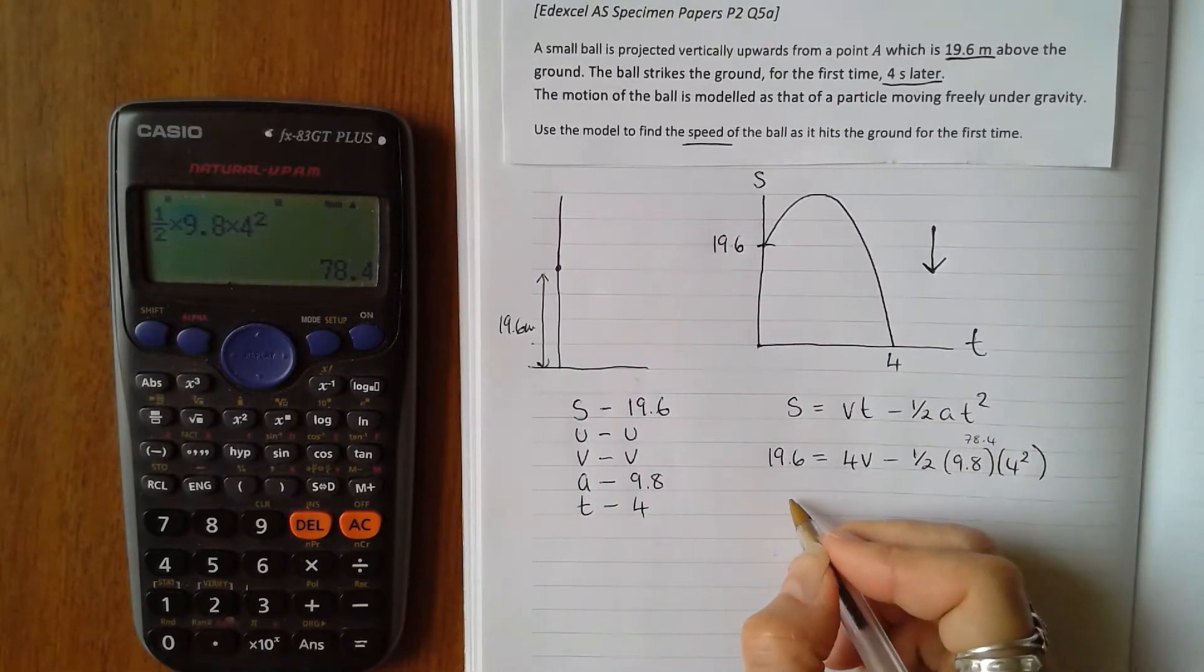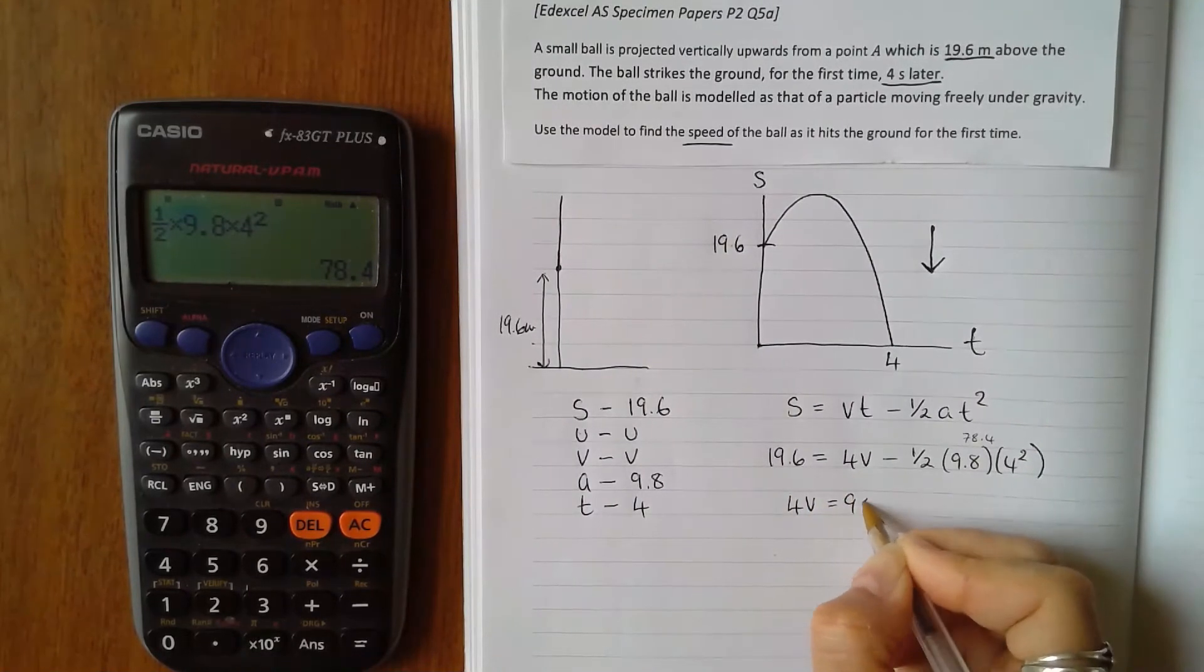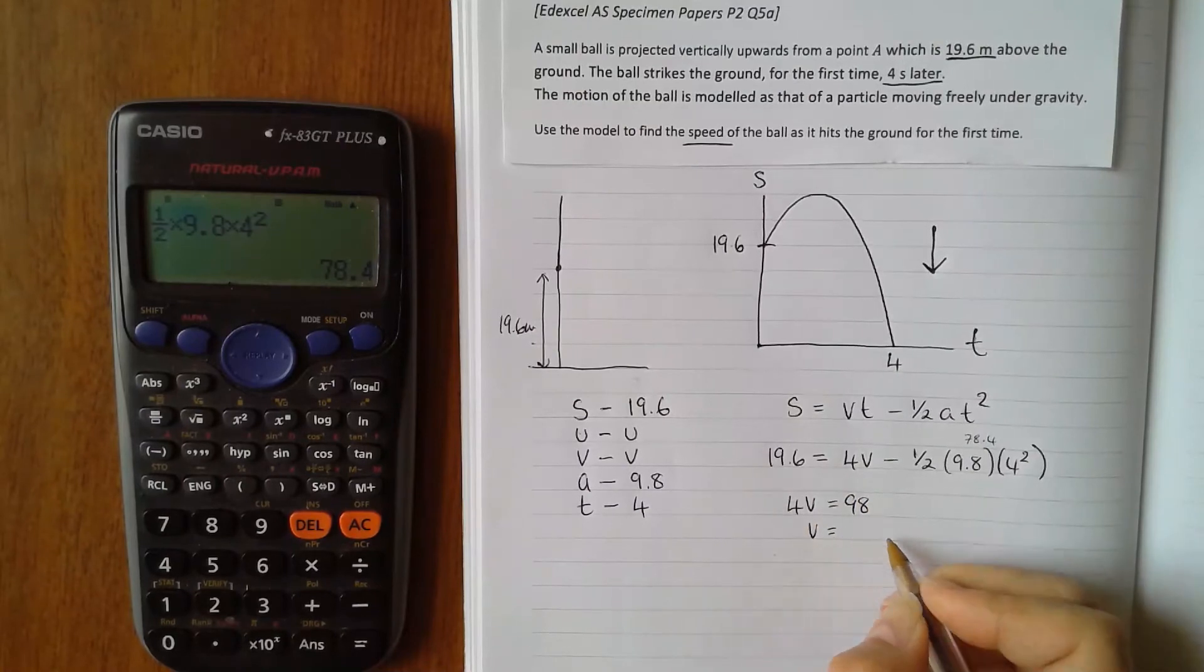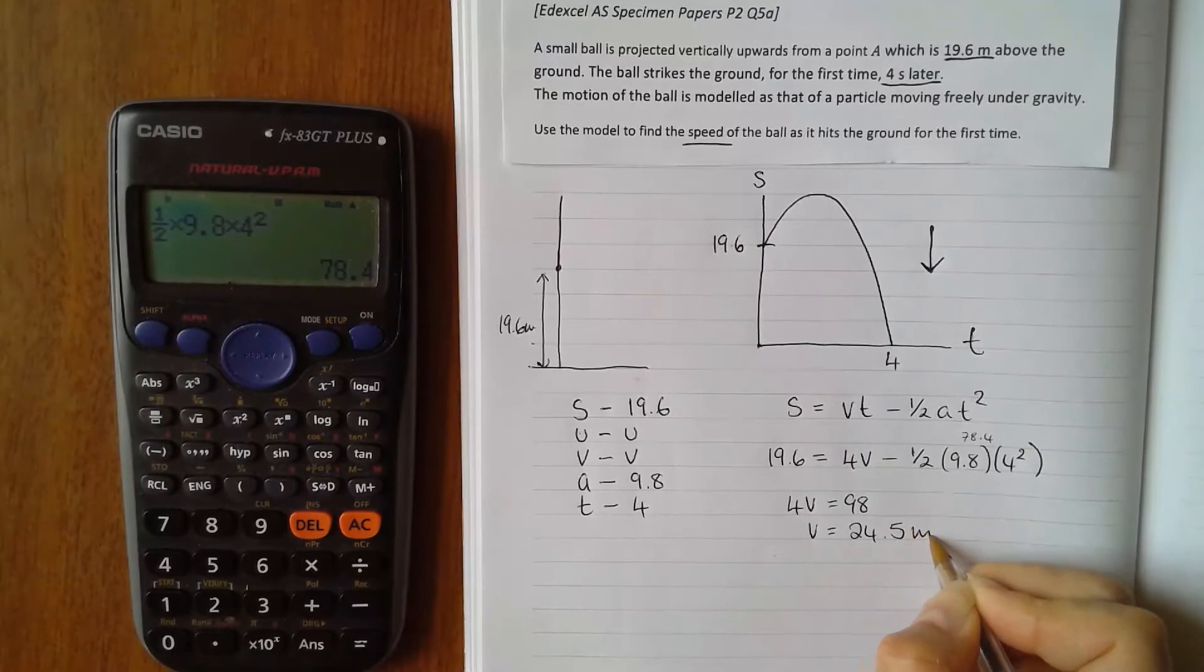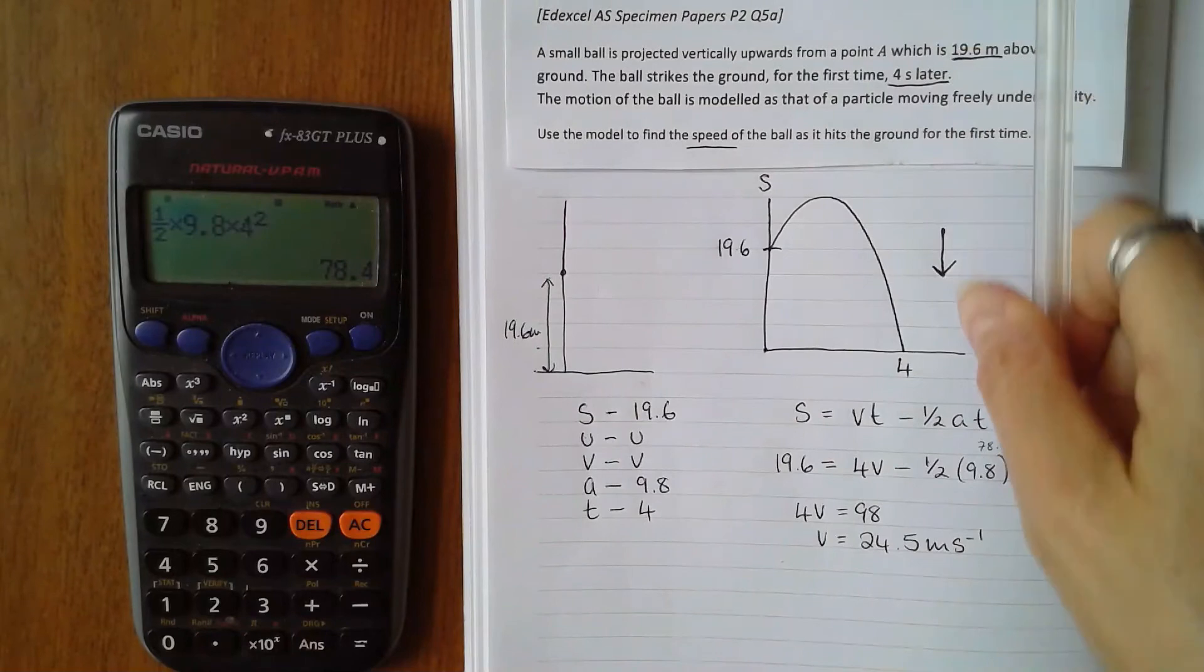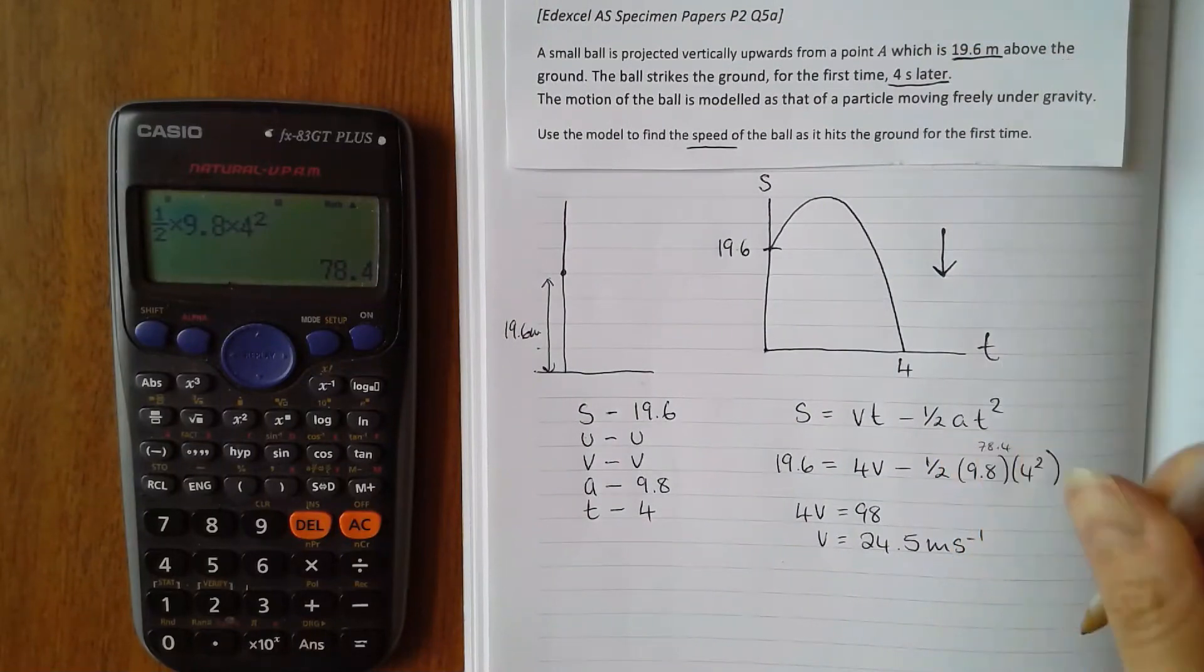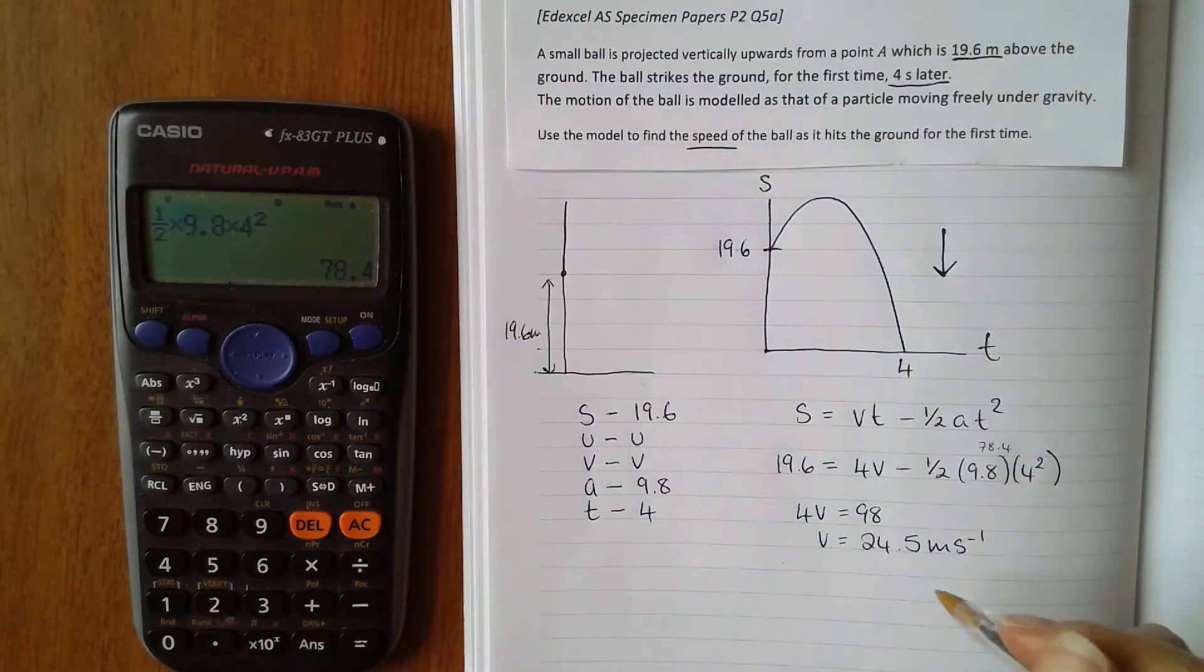We add 78.4 to both sides, getting 4v equals 98, and v equals 24.5 meters per second. Now that velocity is positive because we classed the downward direction as positive. If we classed the upwards direction as positive, that would be negative.